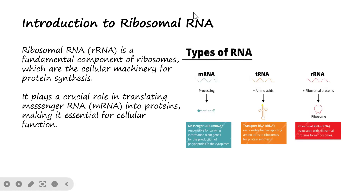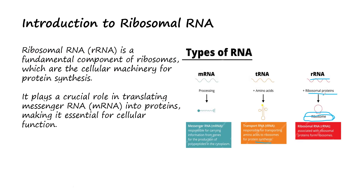There are three common types of RNA: messenger RNA, transfer RNA, and ribosomal RNA. Messenger RNA carries information from the genes for the production of polypeptides in the cytoplasm. Transfer RNA is responsible for transferring amino acids to the growing chain of polypeptides for protein synthesis. Ribosomal RNA is associated with ribosomal proteins to form a ribosome, and its mutual function is for protein synthesis.